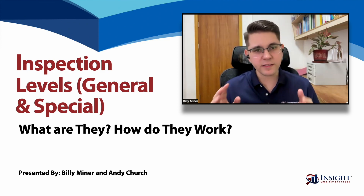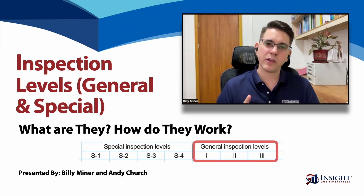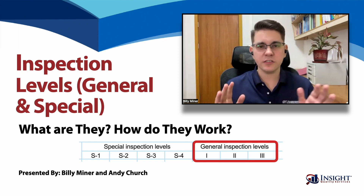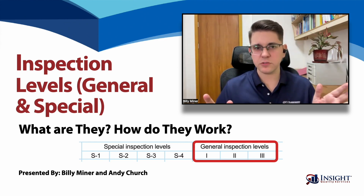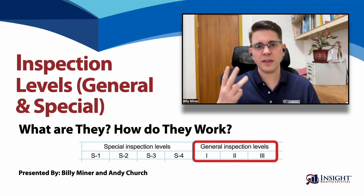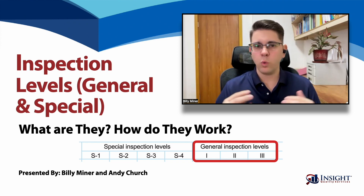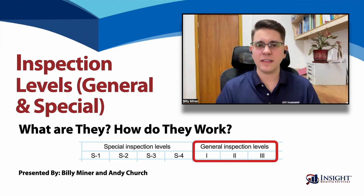You're looking at the AQL chart, and you see in the top right corner it says general inspection levels one, two, and three. So what are they? Well, let's ask Andy Church.